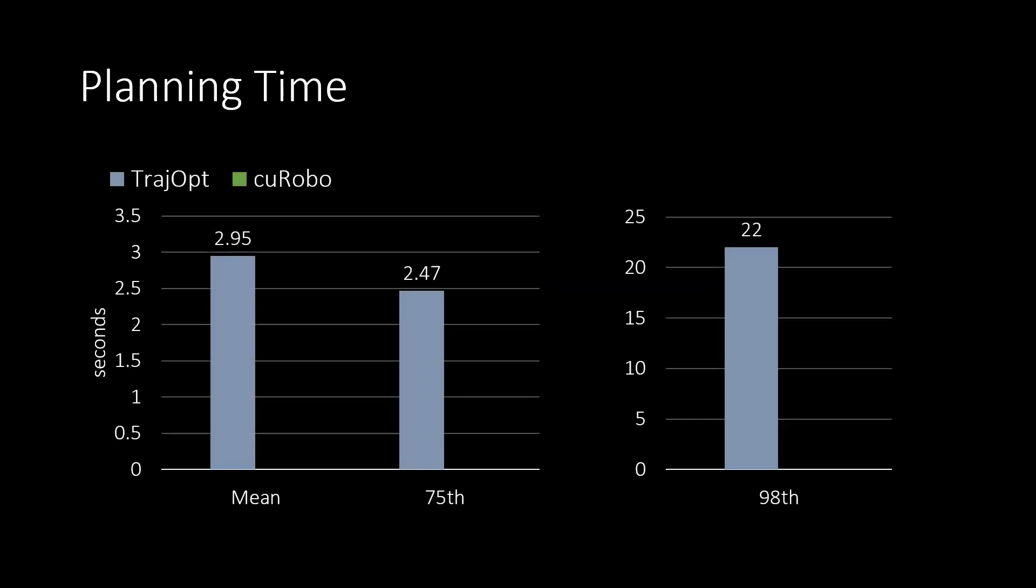Next, we'll see the time it takes to generate these trajectories. The time taken by TrajOpt are in the seconds range, with the 98th percentile taking 22 seconds across the 2600 evaluated problems. In comparison, Kurobo only takes 50 milliseconds on average and 30 milliseconds on the 75th percentile. The time taken on the 98th percentile is 260 milliseconds, 83 times faster than TrajOpt.